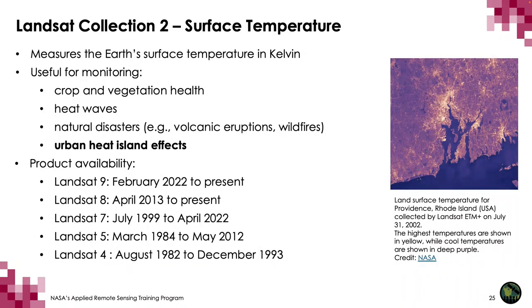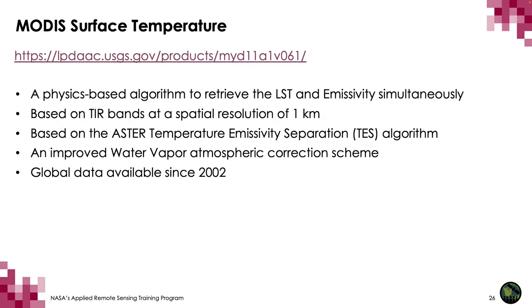Landsat Collection 2 contains Level 1 data from Landsat 1 through 9 and science products from Landsat 4 through 9, including scene-based global Level 2 surface reflectance and a surface temperature science product. Landsat surface temperature measures the Earth's surface temperature in Kelvin and is an important geophysical parameter in global energy balance studies and hydrologic modeling. The MODIS land surface temperature product derived from the Aqua mission contains surface temperature for both day and night at 1 km spatial resolution, with historical data running from 2002 to present in both daily and 8-day average temporal latency.